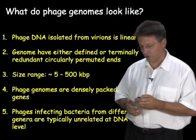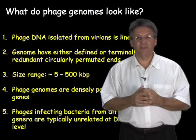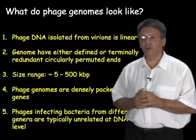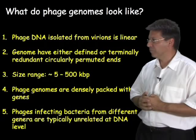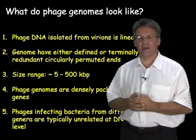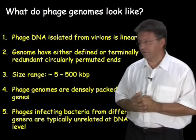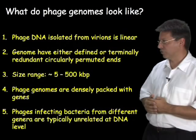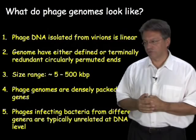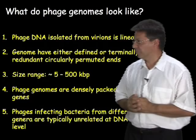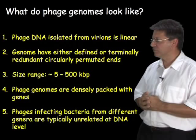The sizes of bacteriophage genomes varies enormously. There are those as small as perhaps 5,000 bases, and there are those as large as 500 kilobases — which is quite amazing when you think that 500 kilobases is about the size of the smaller free-living bacterial genomes. So there are examples of viruses that are the same size genomically and have the same or more genes as small bacterial genomes. The phage genomes tend to be densely packed with genes, so most of the DNA is encoding genes. And as I mentioned, phages infecting bacteria from different genera tend to be unrelated at the DNA level.